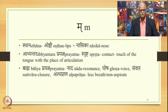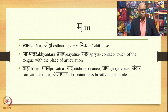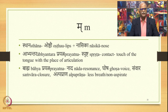The last among these class consonants is ma. The place of articulation is lips (oshthav) and nasika (nose). Abhyantara prayatna is sprashta — contact or touch of the lips. The bahya prayatna is nada, ghosha, and samvara — resonance, voice, and closure. Ma is also alpaprana — requires less breath and is called non-aspirate sound.